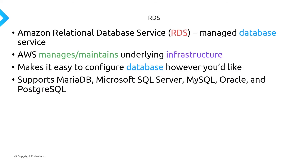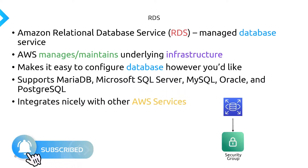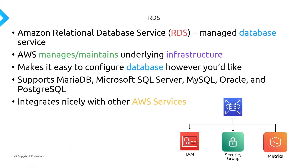RDS supports all of the major relational databases — MariaDB, Microsoft SQL Server, MySQL, Oracle, and Postgres. And with any managed service within AWS, there are a lot of benefits because it integrates nicely with all of the other AWS services. That includes IAM for authentication and authorization, built-in security groups, and the ability to quickly and easily monitor the metrics of your database as well.